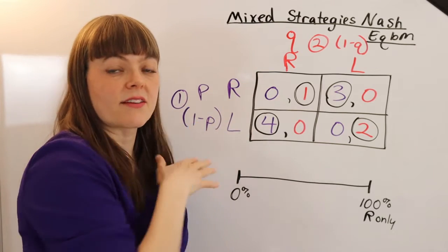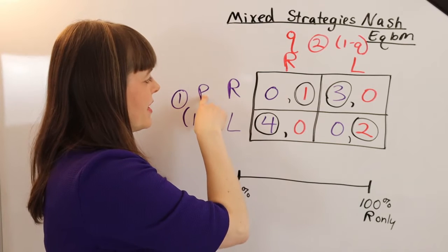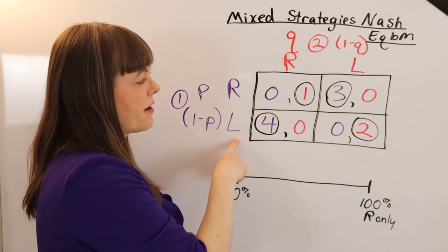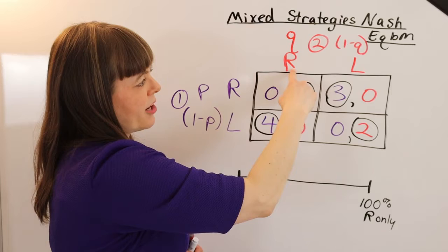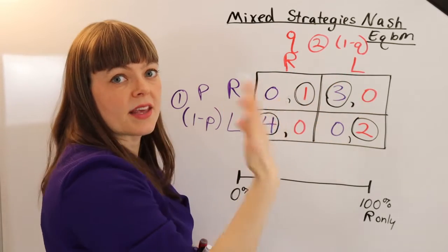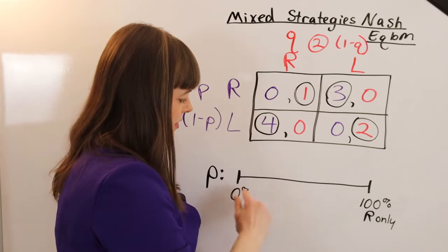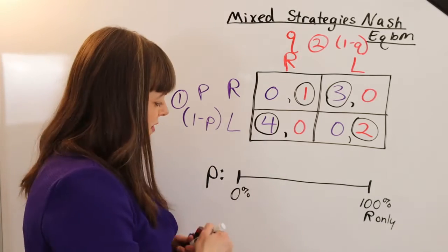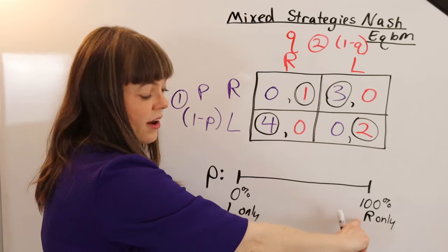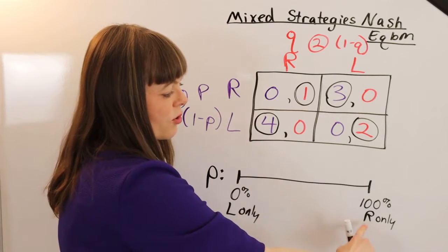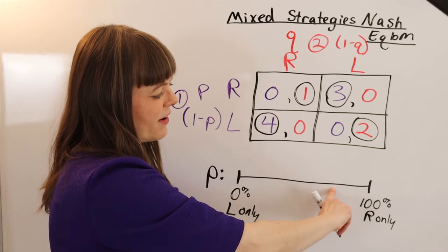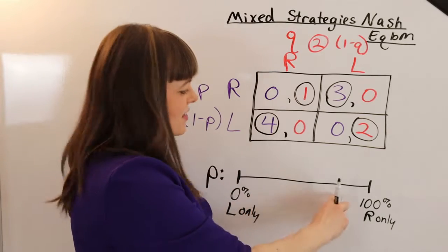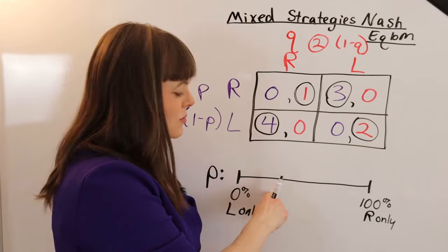It's not about which choice you make — it's about what's your probability of making any given choice. For these players: p is the probability that player one will go right, and one minus p is the probability they go left. For player two, q is the probability they go right and one minus q is the probability they go left. This diagram maps p — the probability of going right — from zero (always left) to 100% (always right), and you can slide this probability up and down.